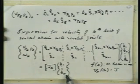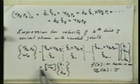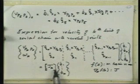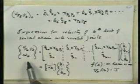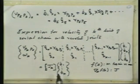We derived the velocity relationship for a serial manipulator. The relationship between the velocity of the end effector or a point on the kth link consists of the velocity of point P_k, which is the origin of the reference frame attached to that link. The angular velocity of the link is related to the joint velocities through a matrix relationship, and this is true for a serial manipulator.